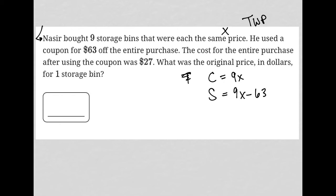The cost for the entire purchase after using the coupon — our sales price S — was $27, which means this turns into 27 equals 9x minus 63. The question asks for the original price in dollars for one storage bin, basically the value of x, which is the price for a single storage bin.